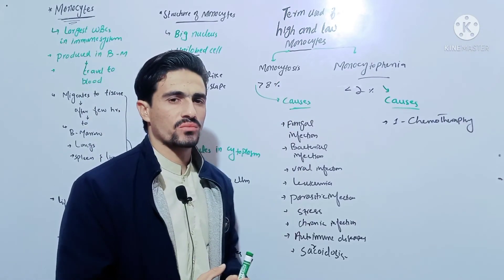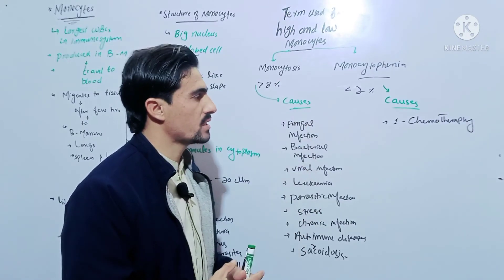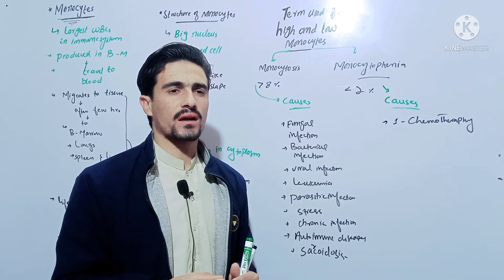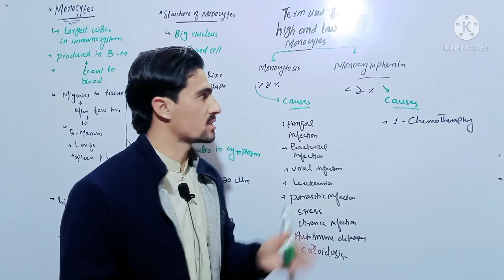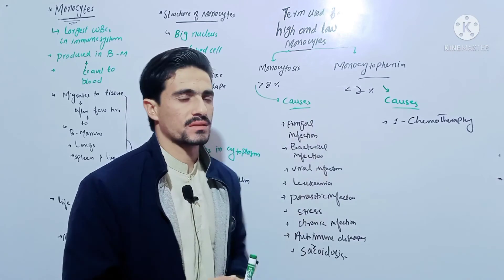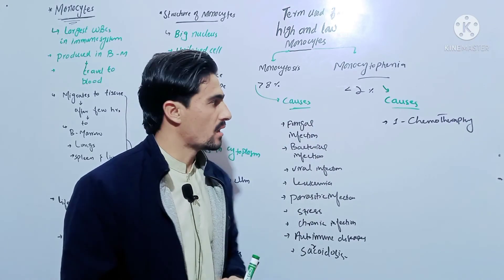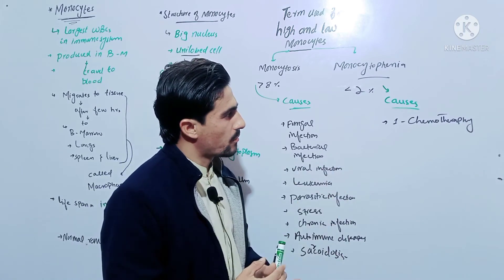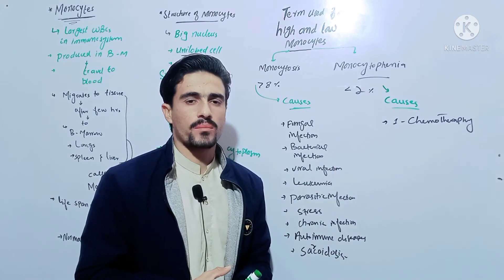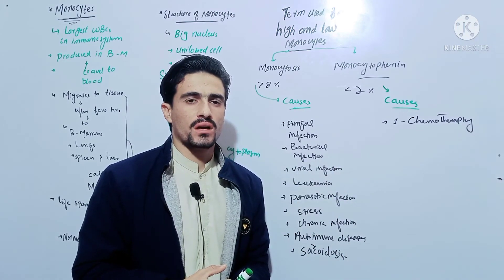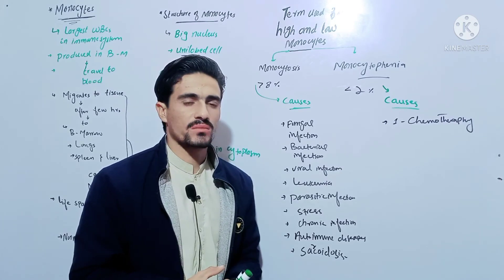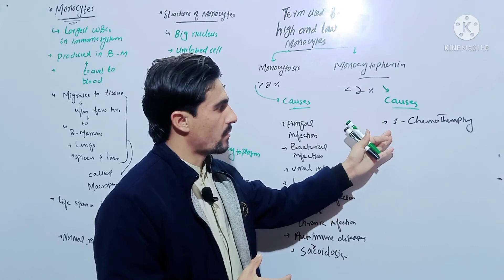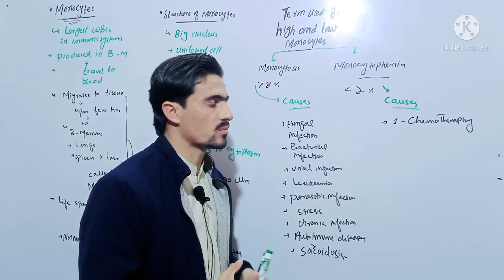Now come to the second term, which is monocytopenia. When monocytes are decreased from their normal range — smaller than 2 percent — that condition is called monocytopenia. The basic cause of monocytopenia is chemotherapy.